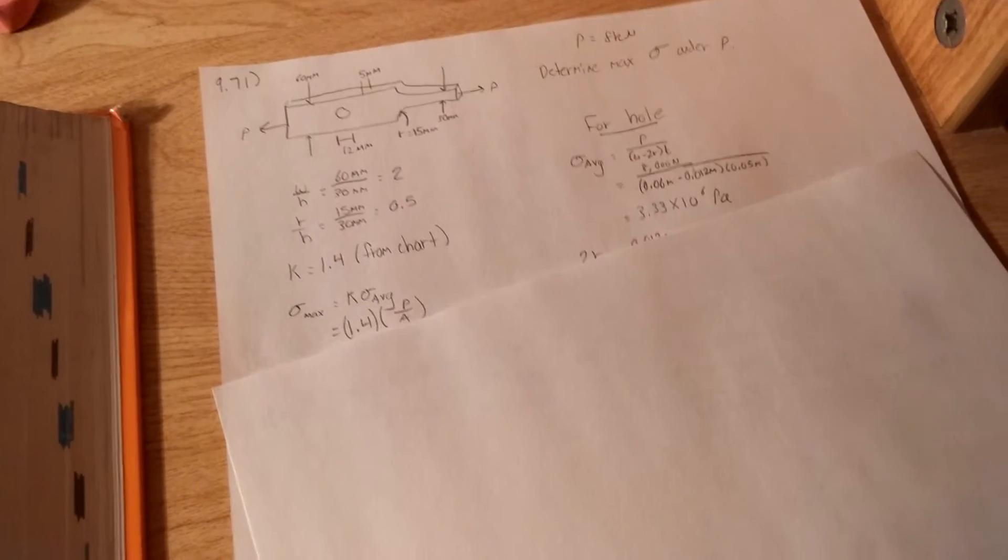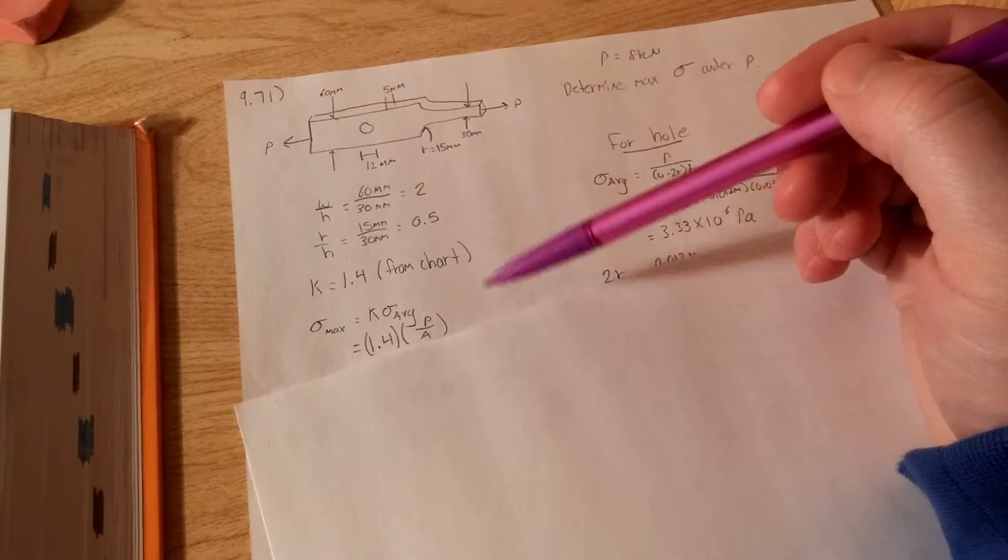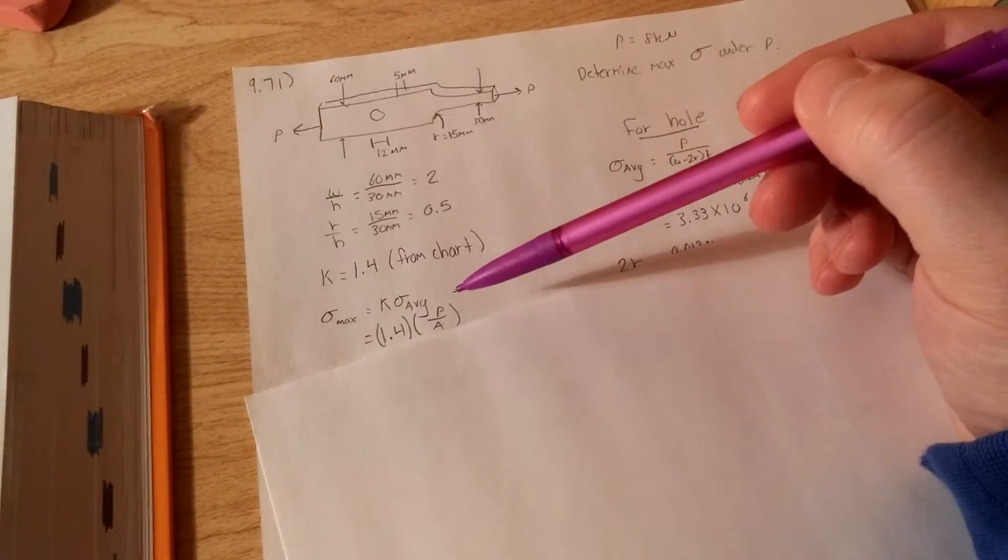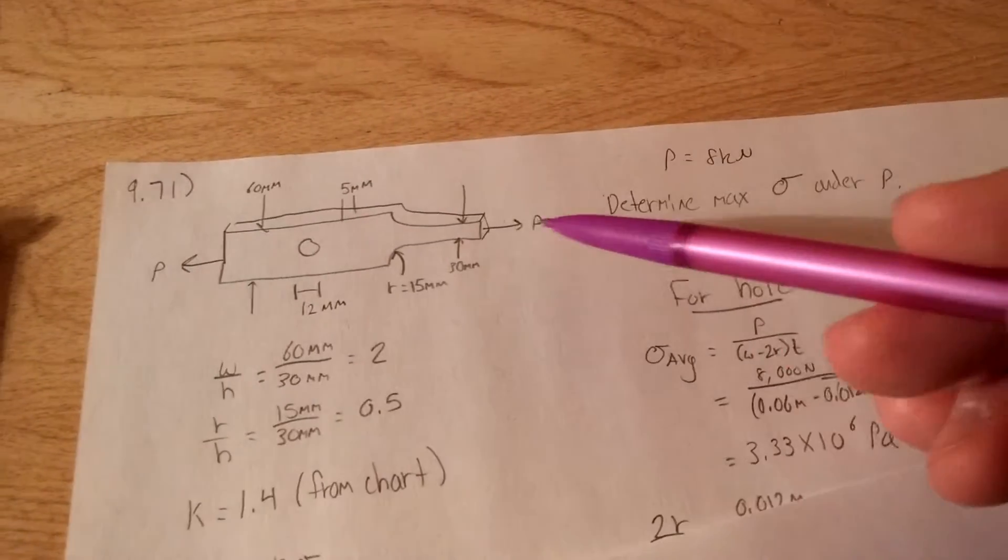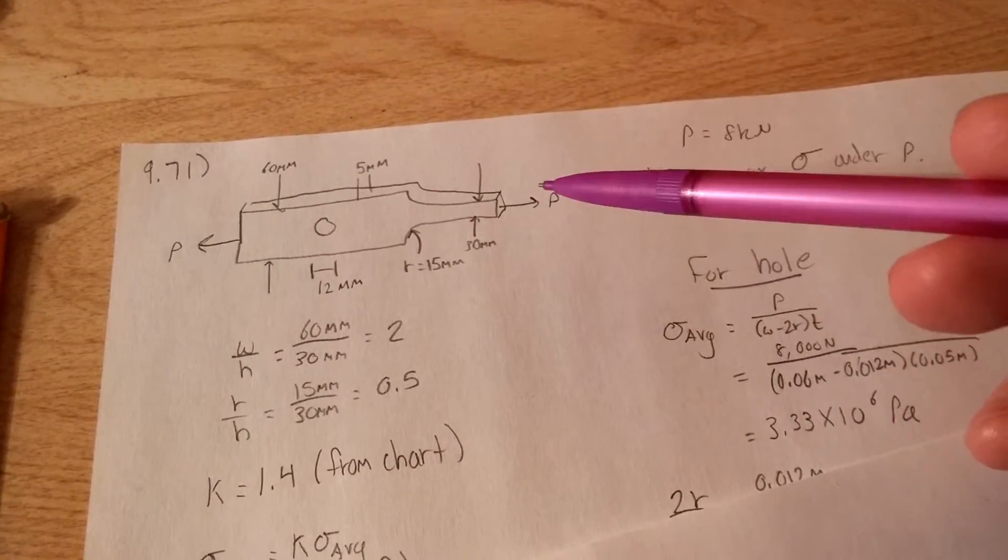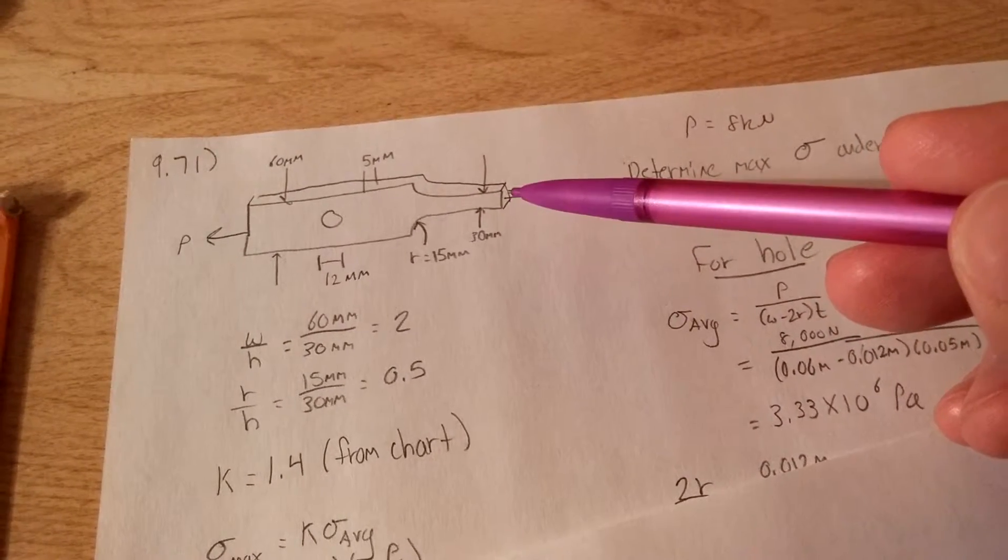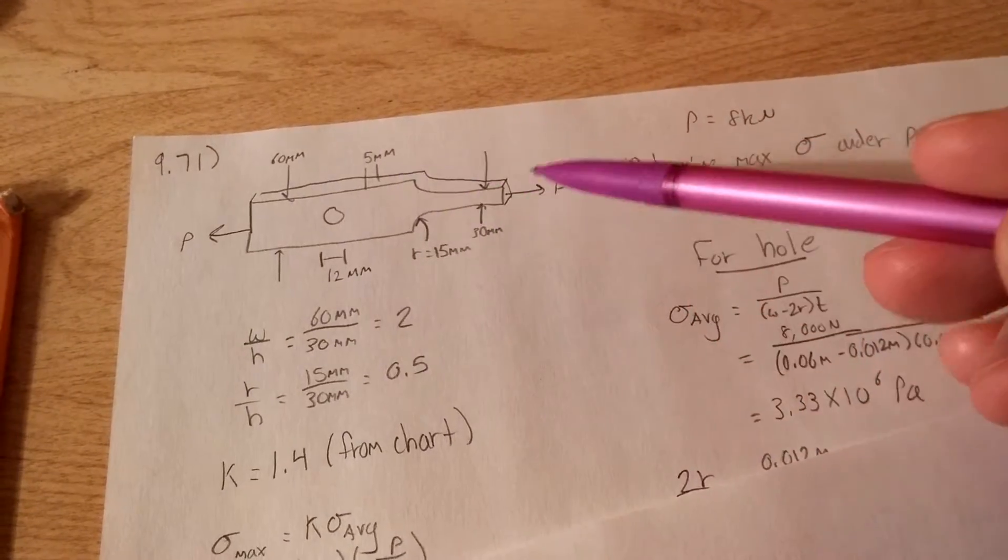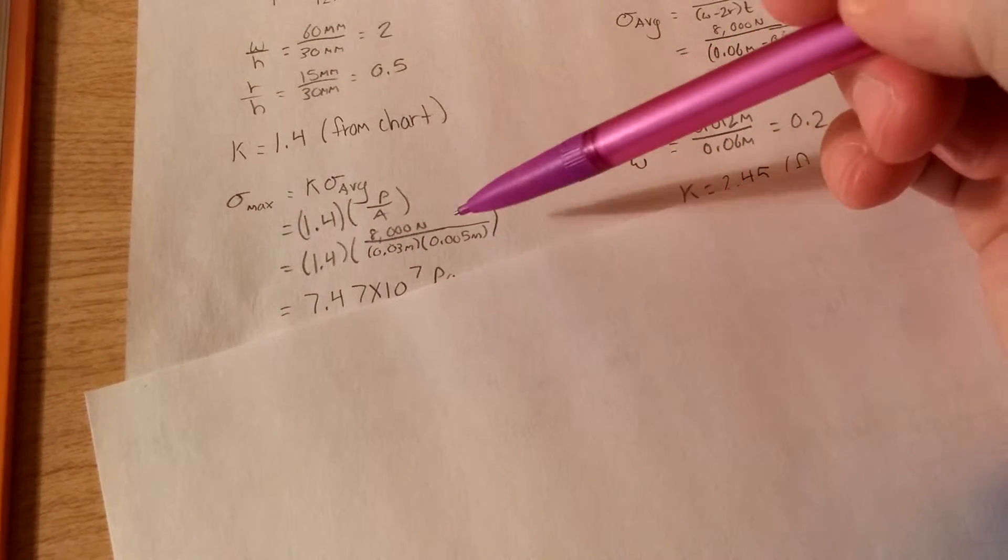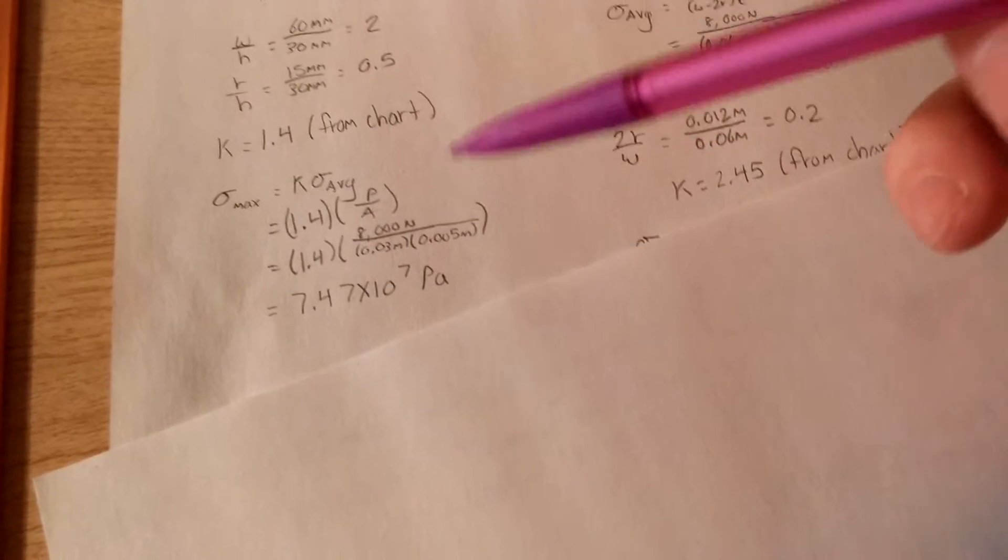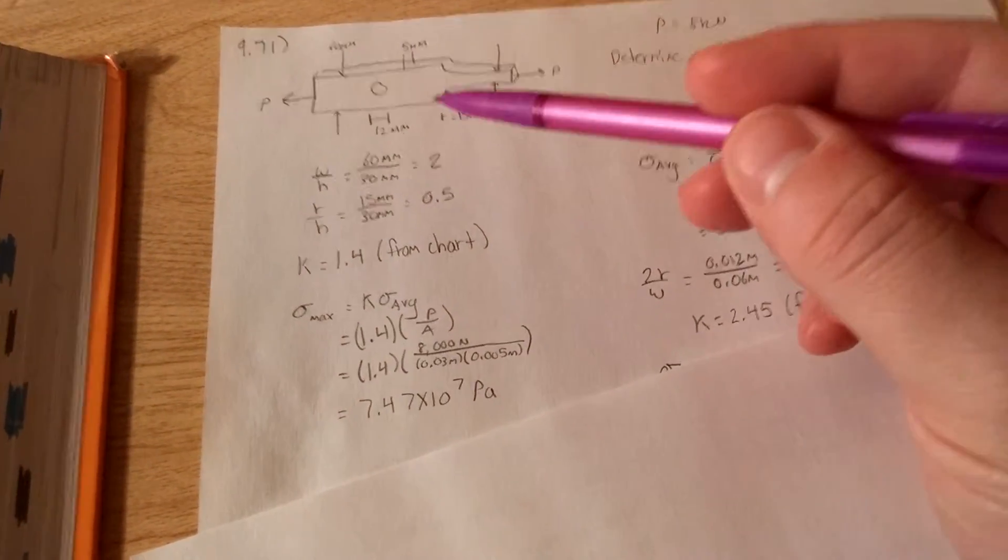So we know that the maximum stress is equal to your K value times your average stress. We know average stress is P over A. We have P, so we have to figure out A. The stress actually is going to be on this little square right here. So that's 30 millimeters times 5 is that area. So 1.4 times your load, you end up getting 7.47 times 10 to the 7th pascals. So we found that for the skinnier end.